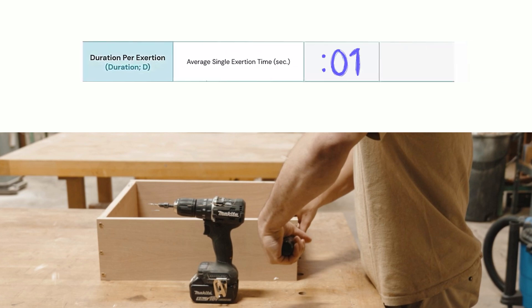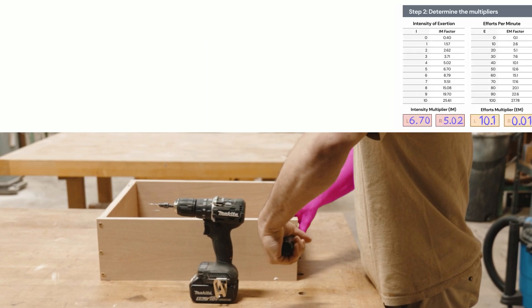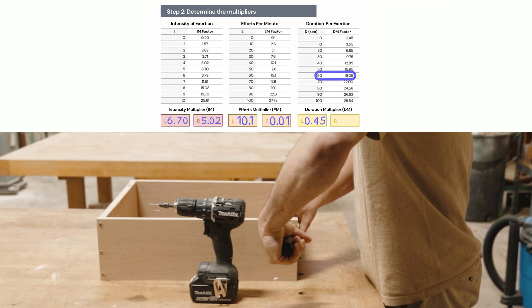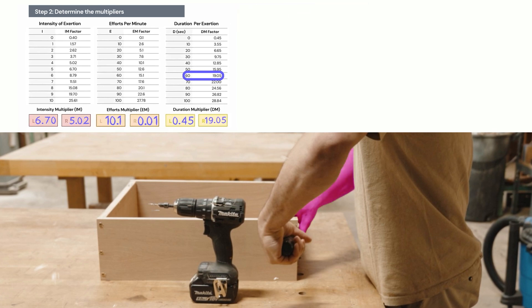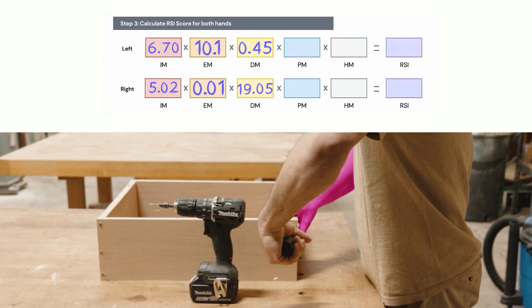You're getting the rhythm here. Now we go to the right hand, the duration per exertion. Same process. The right hand, remember, was a sustained contraction, just stabilizing. So it's a one-minute contraction. We're going to extrapolate the 45 seconds to one minute. That's 60 seconds. We look for 60 seconds on the conversion table. We find its conversion factor. We put that in the yellow box on the right. Drag it down to the yellow box in step three.